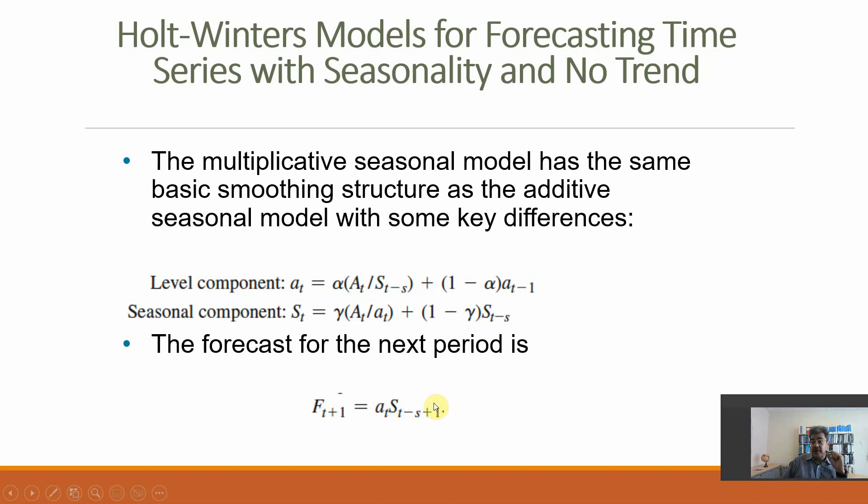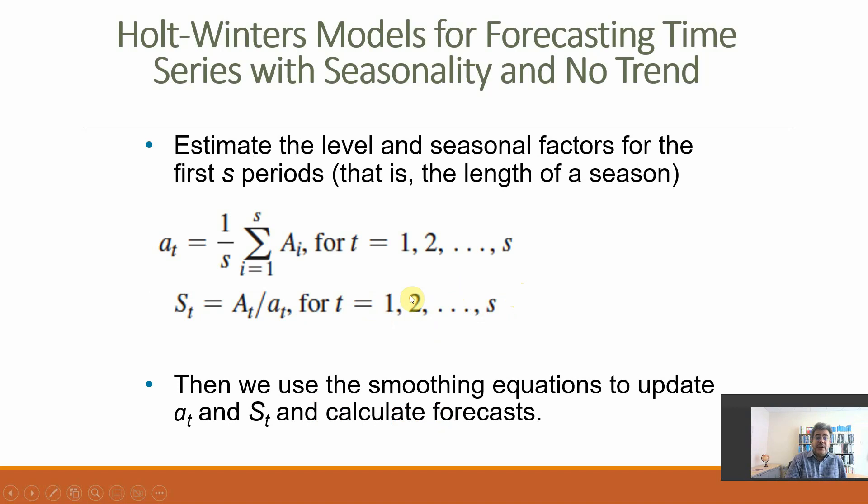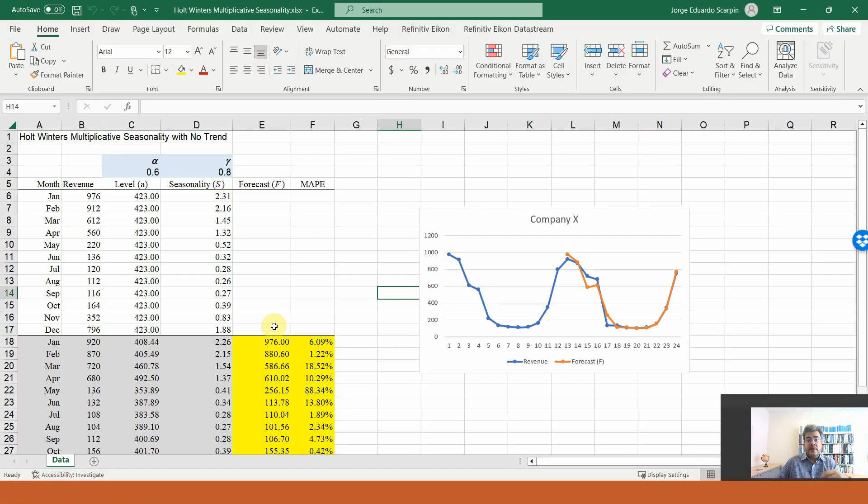However, we have an issue with the initial numbers. How do we find At minus 1 for the first number? We don't have it, or St minus S. So we need a different way to calculate the initial numbers. For the first S periods, first 12 if working monthly or 4 if quarterly, At, just like the additive model, is the average of the 12 or 4 numbers. The first year will be the same number for At. S is the actual number divided by At. Let's go to our Excel file.